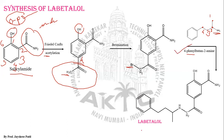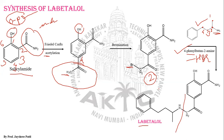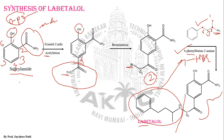When the halogenated moiety is treated with 4-phenylbutan-2-amine, we get the resulting product labetalol. The reaction involves a loss of HBr, after which the portion coming from 4-phenylbutan-2-amine is incorporated while the rest of the structure remains as it is, giving the final structure of labetalol.